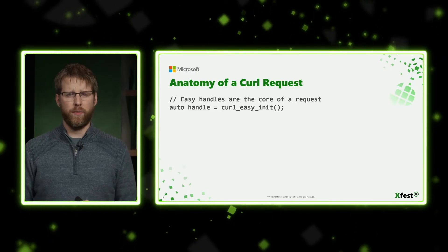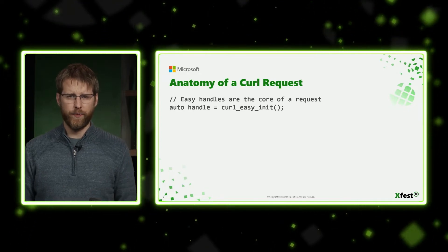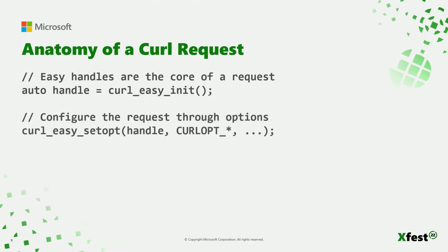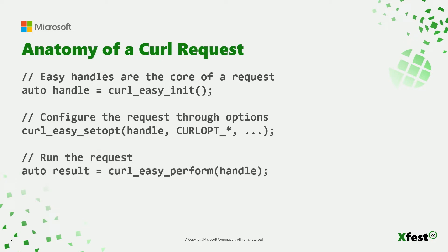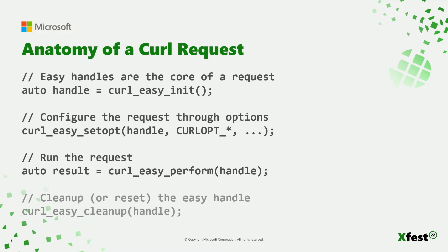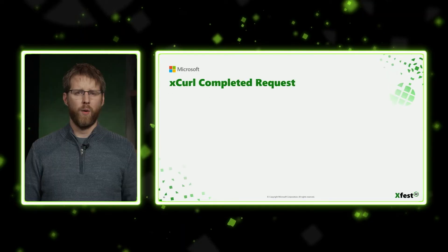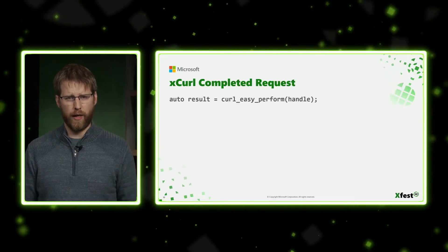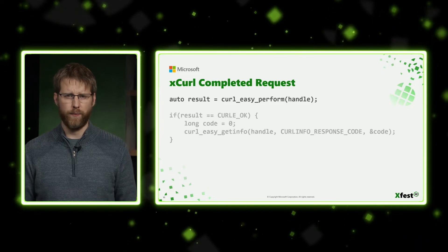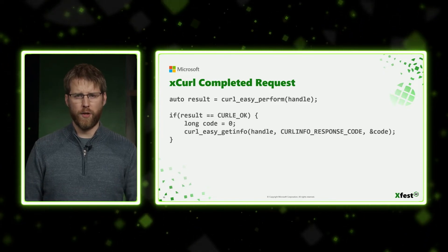It starts with the easy handle — create it through curl_easy_init. This is where you set all of the options and configuration for your request, where it's going to go, and the callbacks to retrieve data from it. After you've fully configured it, you call curl_easy_perform. This is a synchronous API and will only return once your request has been completed. After it's completed, you can clean up your easy handle and move on to the next request. When the request has been completed, you'll get a result, which will be an error code.